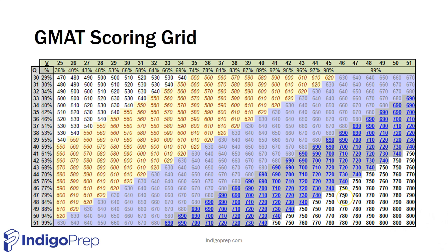Here is an interesting scoring grid for you to look at — this is from my friends at GMAT Pill. This tells you, for example, what if you're getting a 37 on verbal and a 40 on quant? That means you're currently at a 640. If your goal score is a 700, how do you get there? Well, if you think you can get your quant up to a 45, you'd need to get your verbal up to a 41. Spending time with a grid like this can help you build a theory of what your 700 is going to look like.